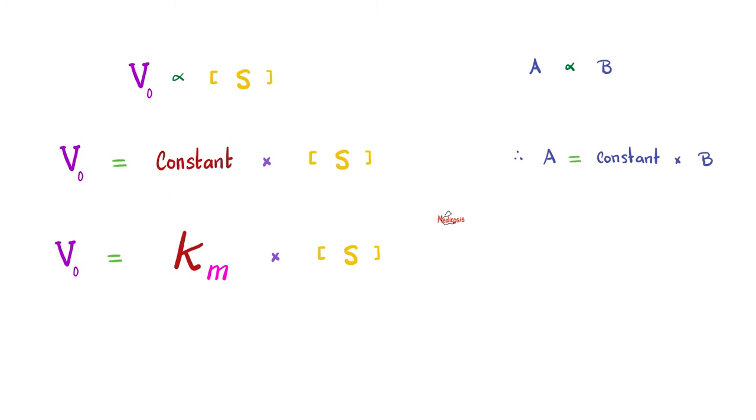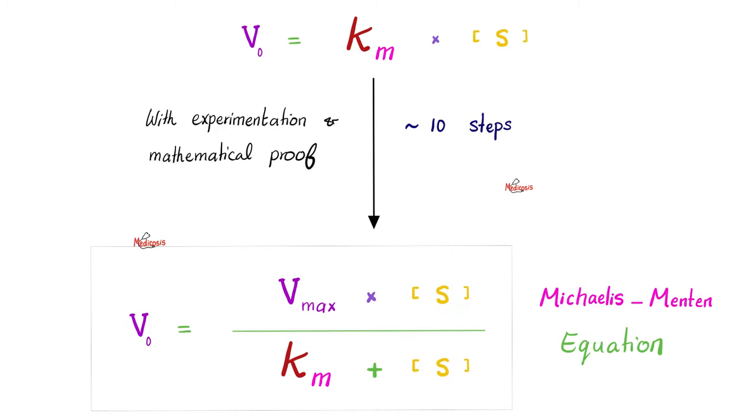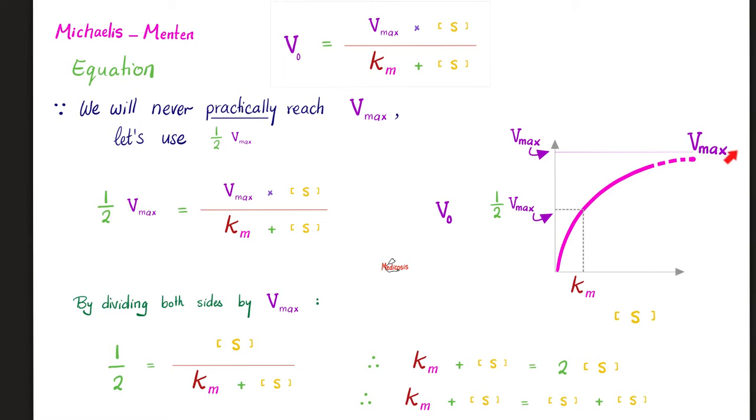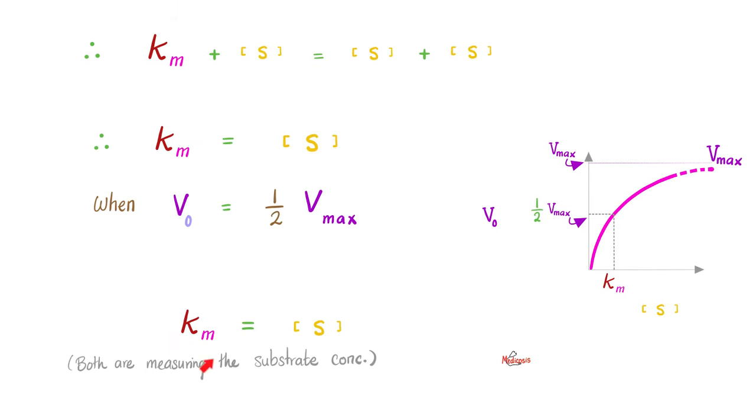Therefore, the rate of the reaction equals, what's the name of the constant? Well, in Latin or German, constant is K, and the M stands for Michaelis. So from this, and through ten steps of mathematical proof, we can arrive to this, which is the Michaelis-Menten equation. Since we will never practically reach Vmax because it's a theoretical point, therefore let's come down to earth and talk about just half of Vmax, which actually corresponds to Km on the x-axis. Then you divide both sides by Vmax, and then you arrive that Km plus S equals S plus S, which means that Km is a measure of the substrate concentration when the velocity is half of that of Vmax.